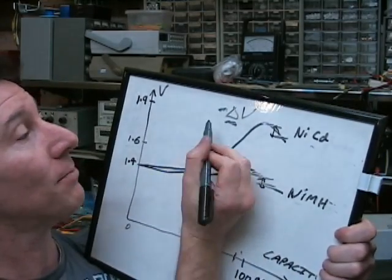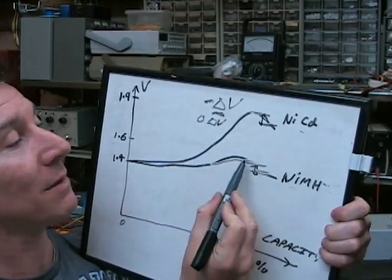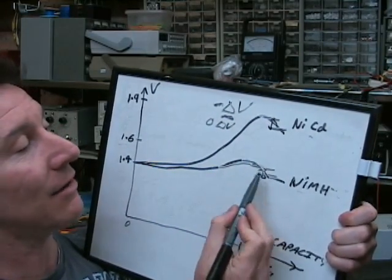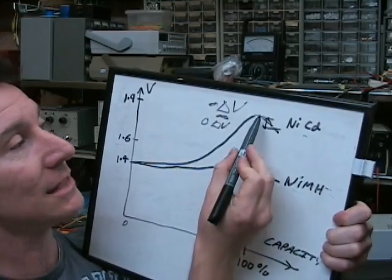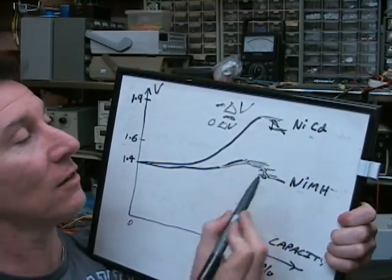And it can also be what's called zero delta V, which means it may not detect it going down. It may just actually detect that it's flattened off like that over time.